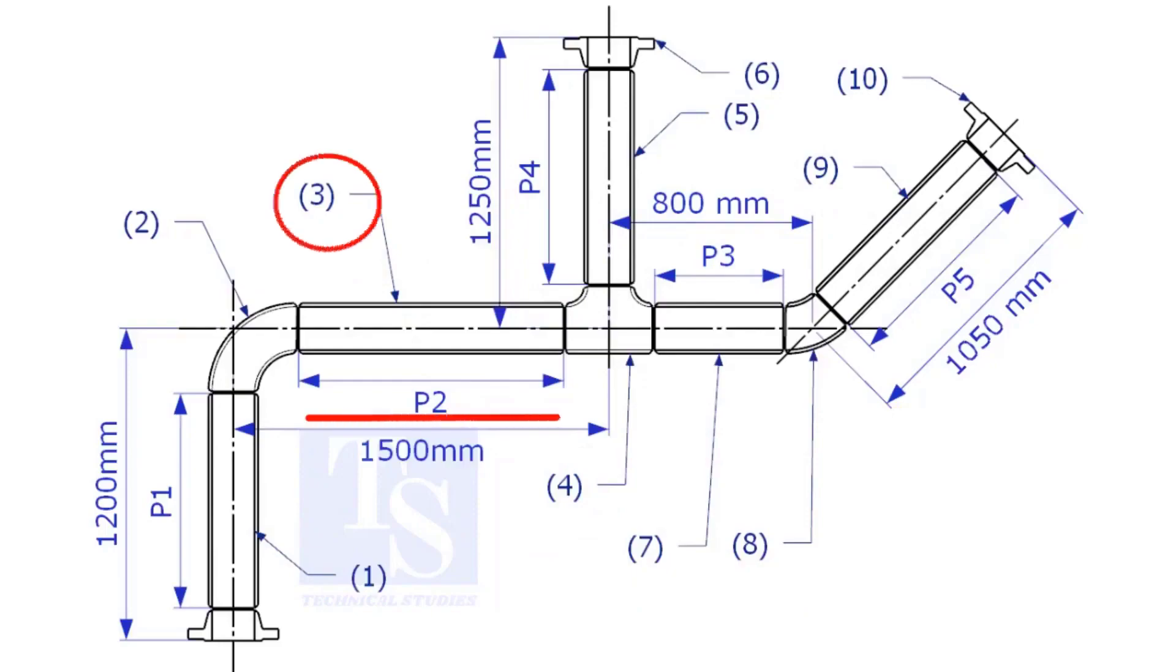Let us calculate the length of item number 3. We already know the takeoff length of the 6 inch long radius elbow. Now, check the chart for the takeoff length of the equal tee.